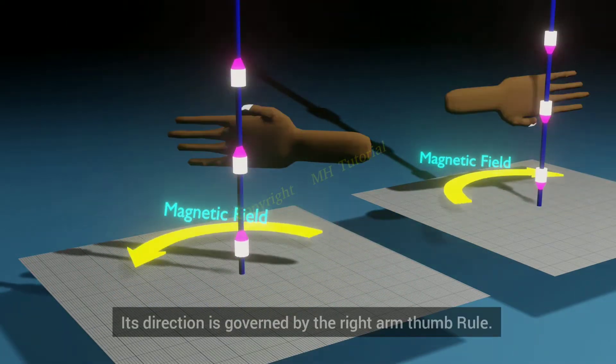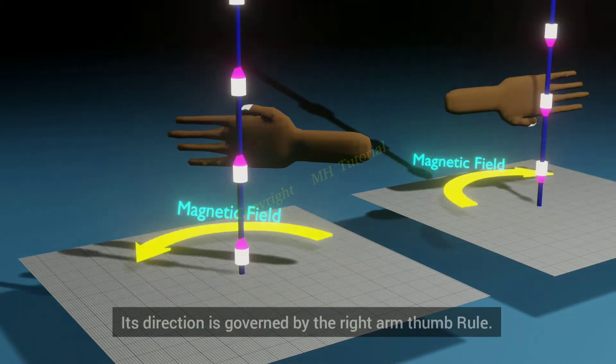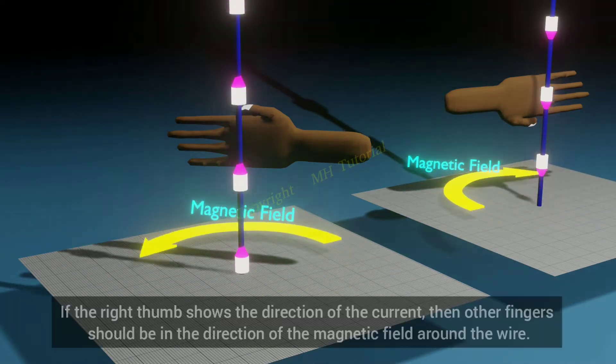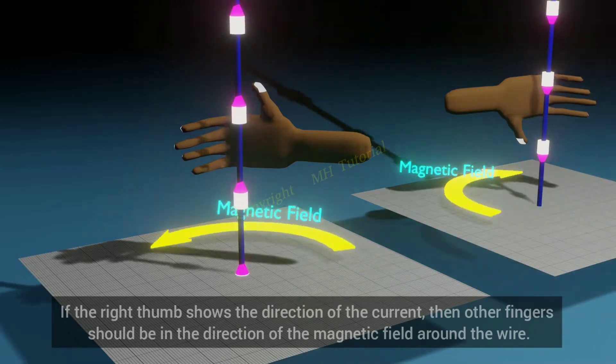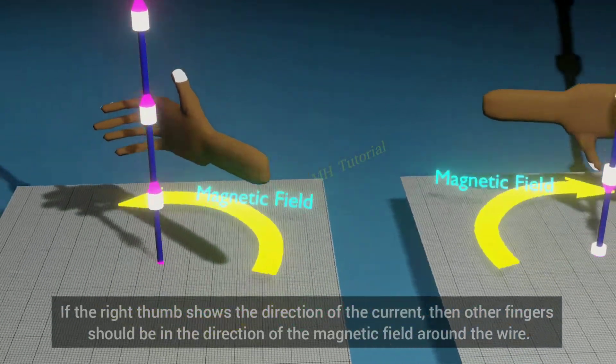Its direction is governed by the right-arm-thumb rule. If the right thumb shows the direction of the current, then other fingers should be in the direction of the magnetic field around the wire.